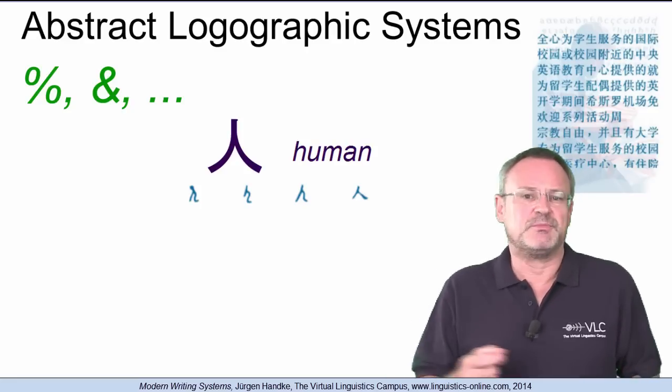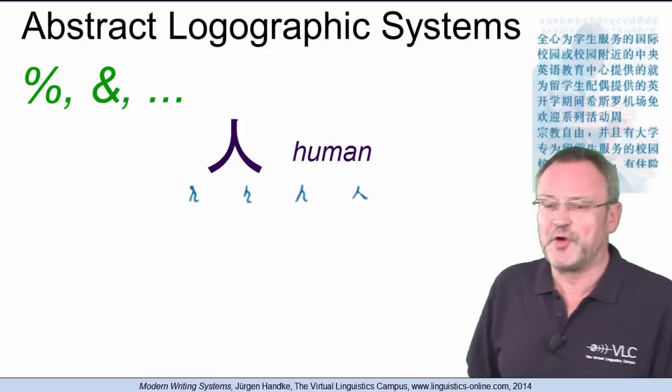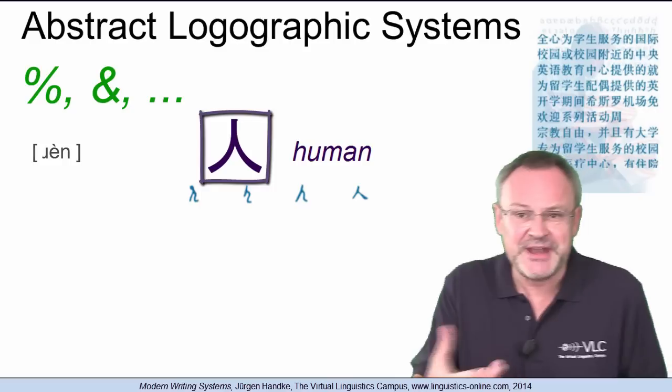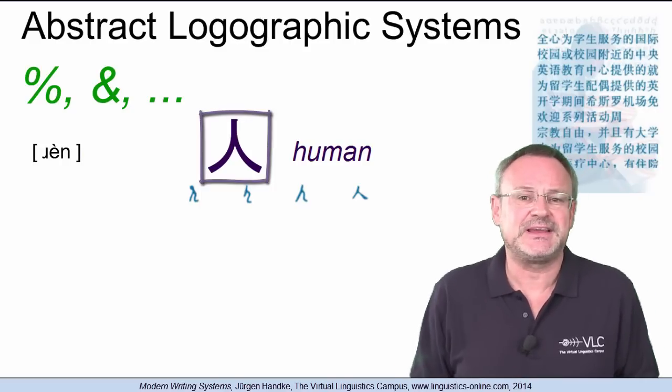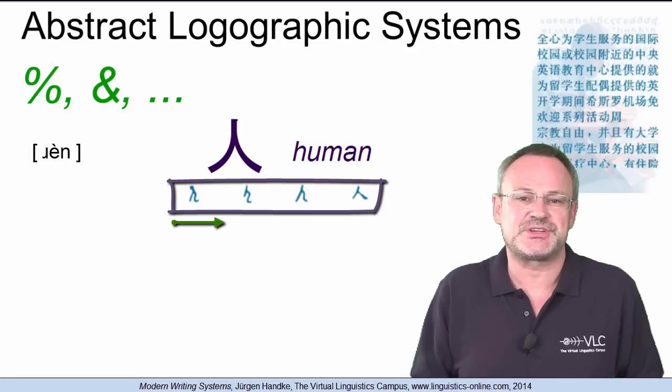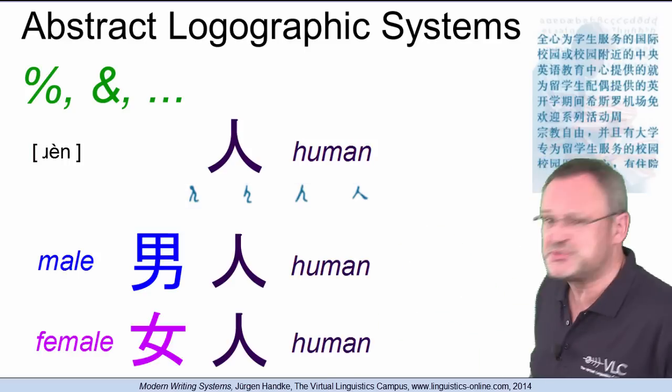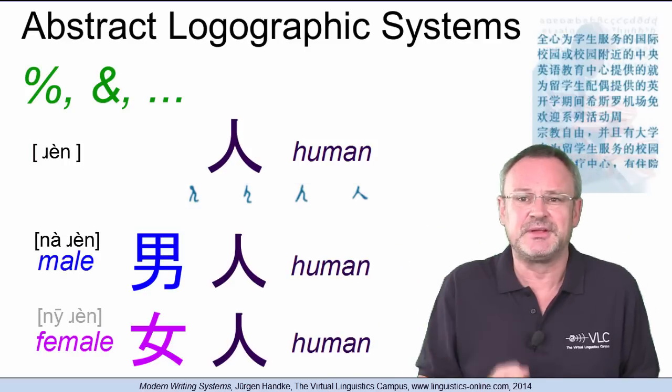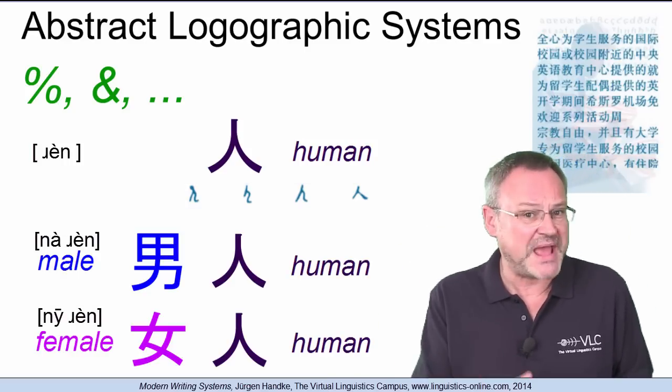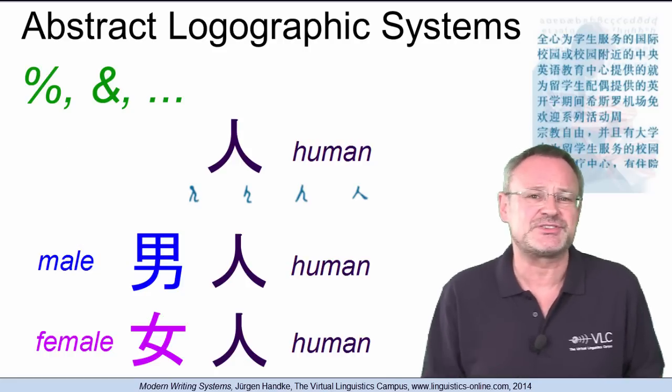In Chinese, the most well-known logographic writing system, the symbol for human, Ren, is relatively clearly identifiable and even more so the historical predecessors of this symbol. To understand the compound symbols, Naren and Nuren for man and woman, however, that requires some sort of fantasy.